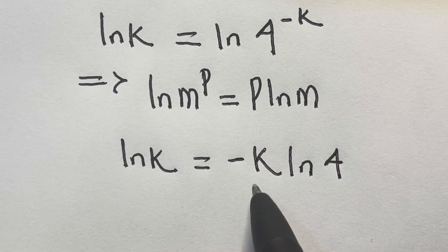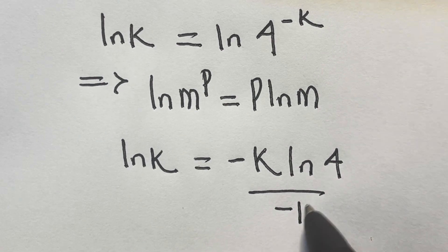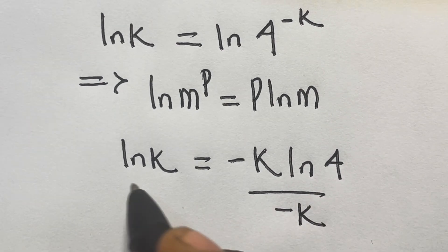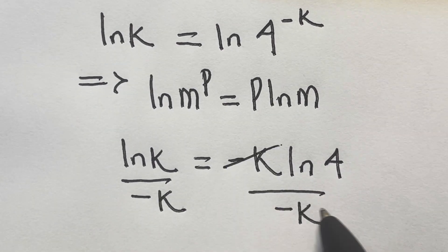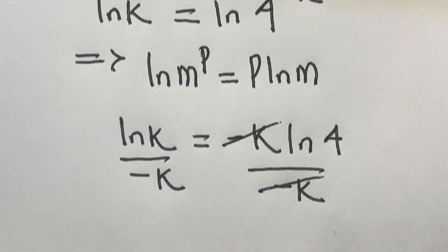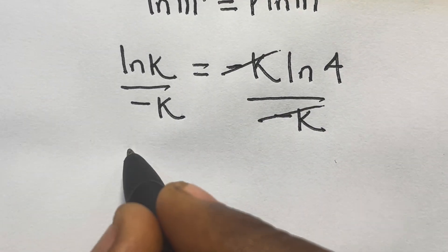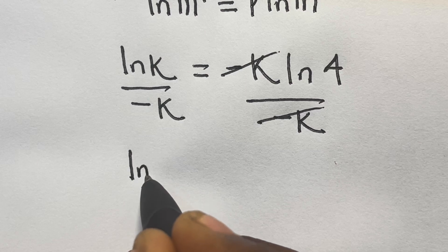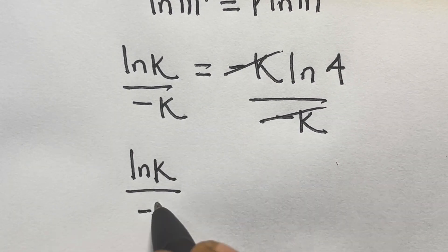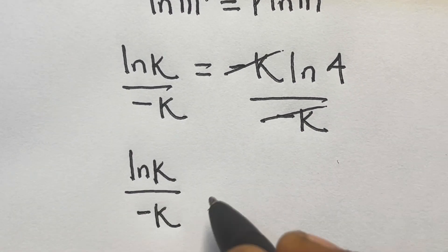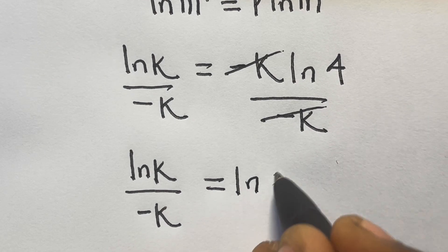So from here now, we can easily divide both sides by minus k. We cancel minus k on the right-hand side. So all we are left with on the left-hand side is ln k divided by minus k, and it equals ln 4.